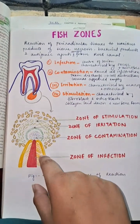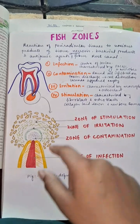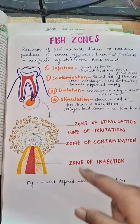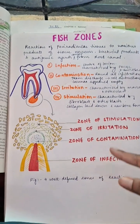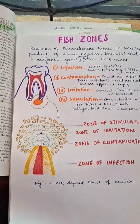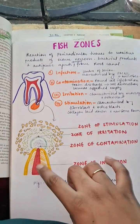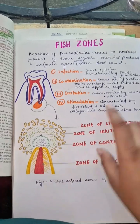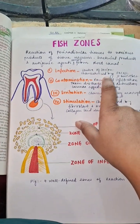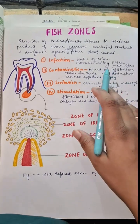The reactions we see are described by Fish, who described four well-defined zones: the zone of infection, zone of contamination, zone of irritation, and zone of stimulation. The innermost zone is the zone of infection — the centermost zone, also known as the center of the lesion, characterized by polymorphonuclear leukocytes and microbes.